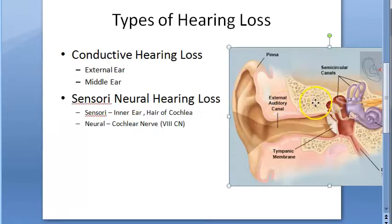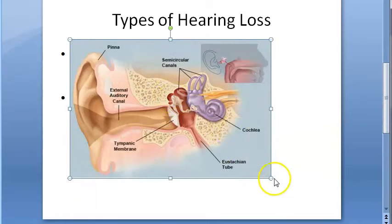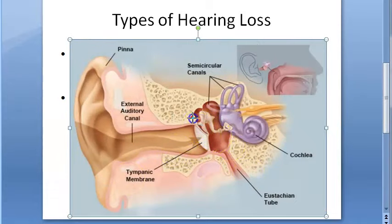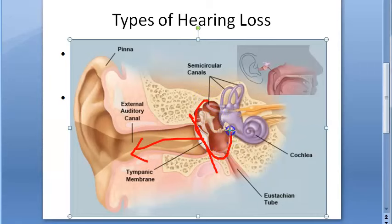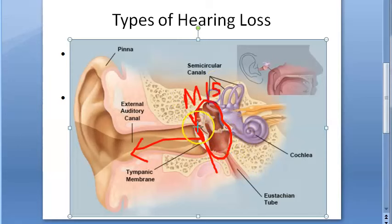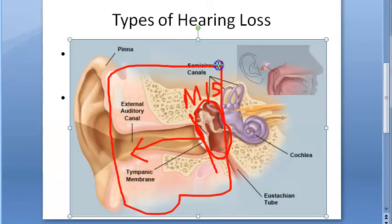Looking at the anatomy of the ear: the tympanic membrane is a boundary — anything outside of that is the external ear. From the tympanic membrane to the labyrinth is the middle ear, which contains the tympanic membrane, the ear ossicles — malleus, incus, and stapes — and some muscles. Any problem with the external ear or middle ear will cause conductive hearing loss.